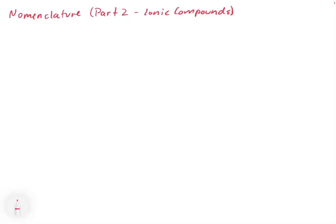In this video we're going to look at naming ionic compounds. This is the second part of the nomenclature series where we are going to take what we learned about ions and now combine the anion and the cation together to name the compound.